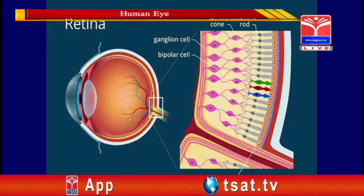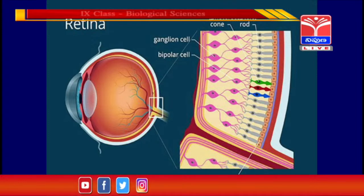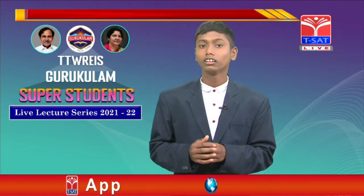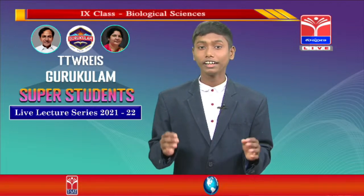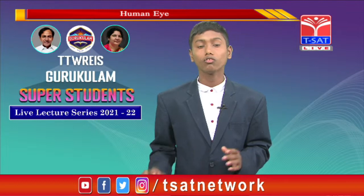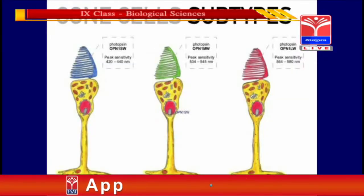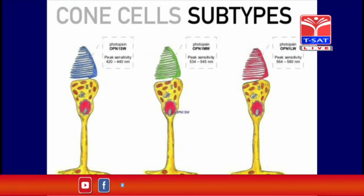Rods contain the pigment called rhodopsin, which consists of the pigment opsin and vitamin A. You might have seen several people with vitamin A deficiency having the problem of night blindness. In fact, rods are primarily responsible for vision in dim lighting. Coming to the cones, cones are of 3 types based on the pigment called photopsin. Each pigment responds to either blue, red, or yellow color. As you may know, these are the primary colors, and several combinations of these colors give rise to various colors.